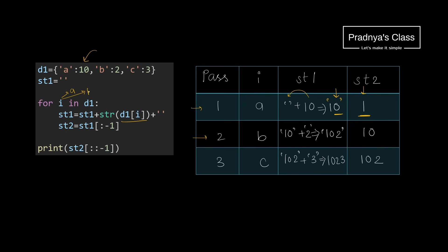In the second pass, the value of i will be the second key, which is nothing but 'b'. The corresponding value is 2, which will get concatenated to the previous string. Previous string is '10', so now the string gets updated as '102'. Again removing the last character of the string, we get '10'.